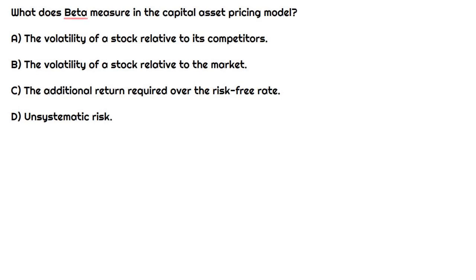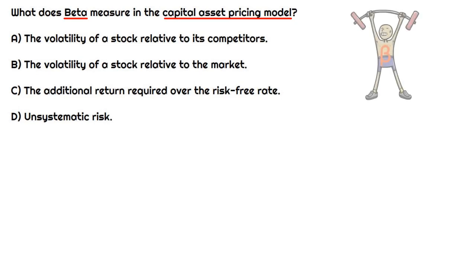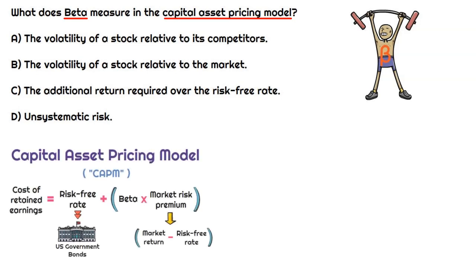In this question, we're focused on what does the beta measure in the capital asset pricing model. The capital asset pricing model is used to calculate the cost of retained earnings, and this is part of the company's weighted average cost of capital. And there's the beta.